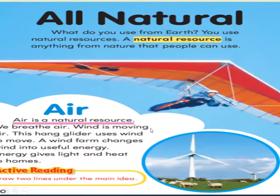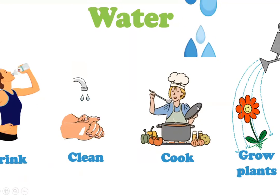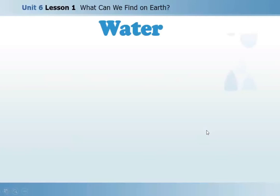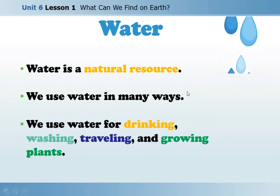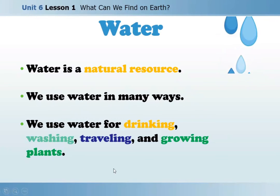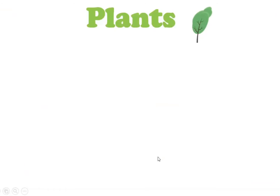Air is a natural resource. The second natural resource is water. Water is a natural resource. We use water in many ways, like taking a shower, washing our hands, cooking, and growing plants. We also use it for traveling. Like this girl giving a bath to her dog, drinking water, watering plants, and traveling with a boat on the water.